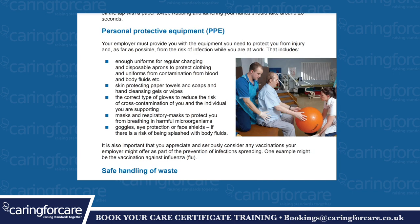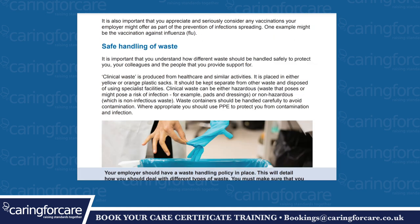Your employer must provide you with the equipment you need to protect you from injury and, as far as possible, the risk of infection while at work. That includes enough uniforms for regular changing; disposable aprons to protect clothing from contamination from blood and bodily fluids; skin-protecting paper towels, soaps and hand-cleansing gels or wipes; the correct type of gloves to reduce the risk of cross-contamination; masks and respiratory masks to protect from breathing in harmful microorganisms; and goggles or face shields if there is a risk of being splashed by bodily fluids. It is also important to consider any vaccinations your employer has on offer, such as the vaccine against influenza.